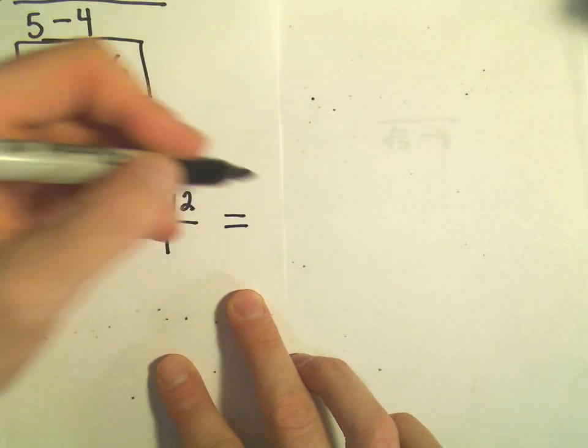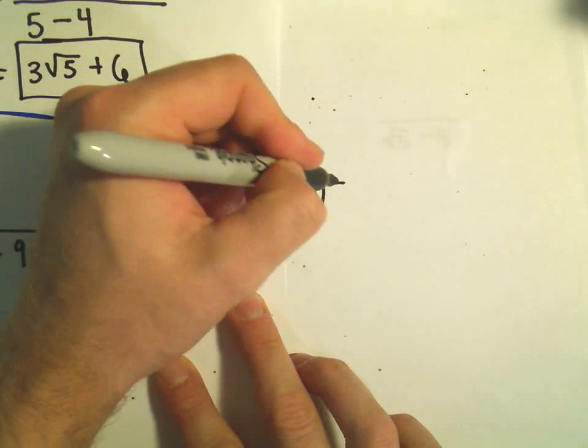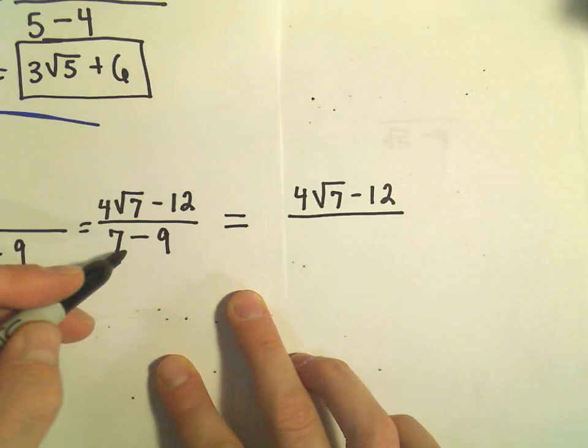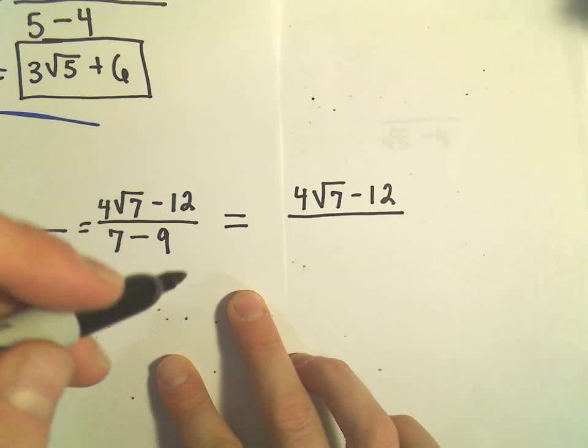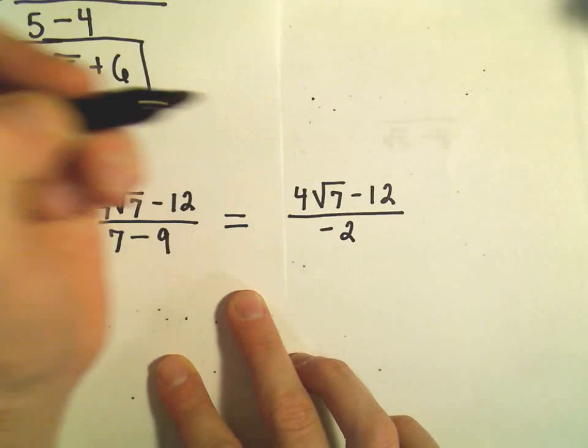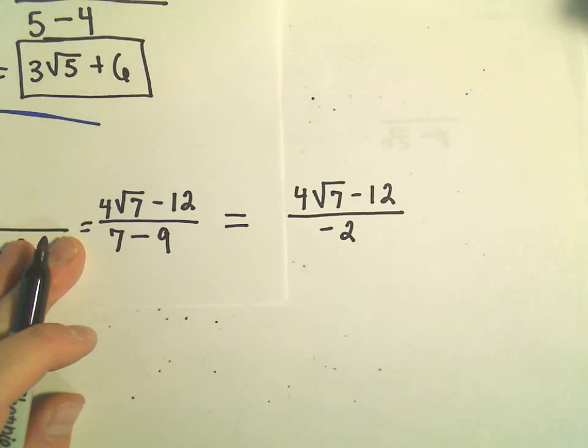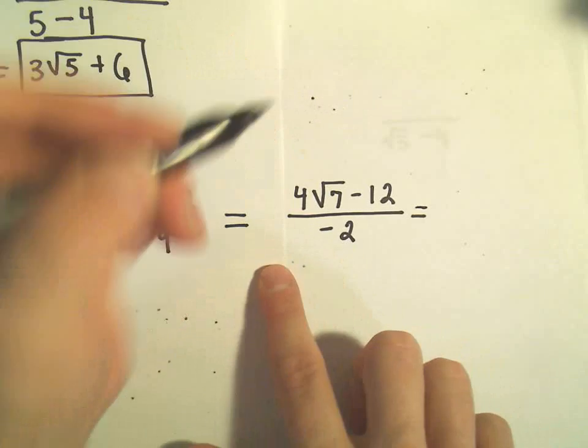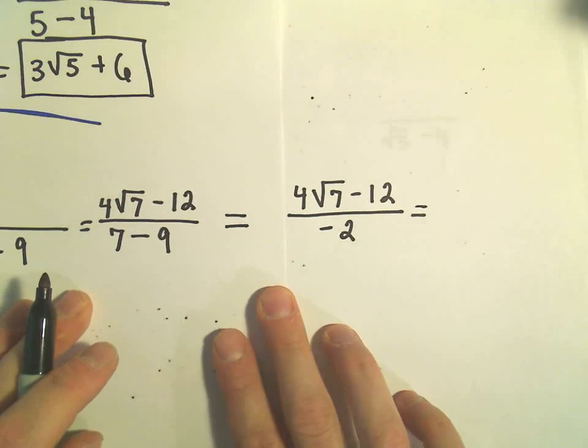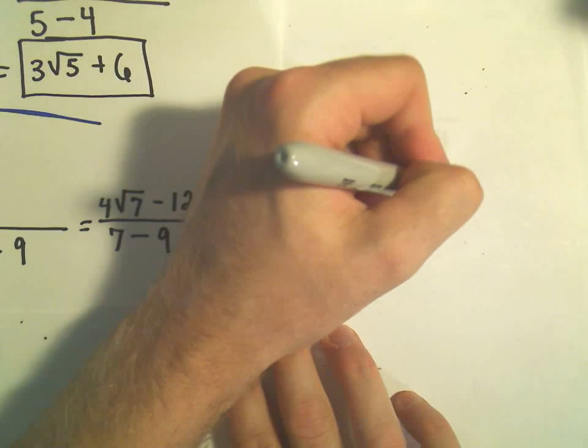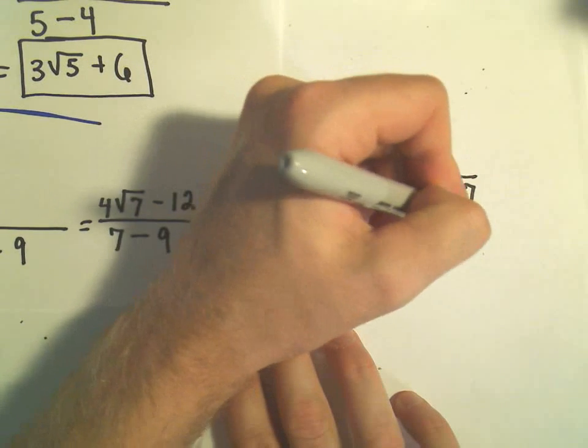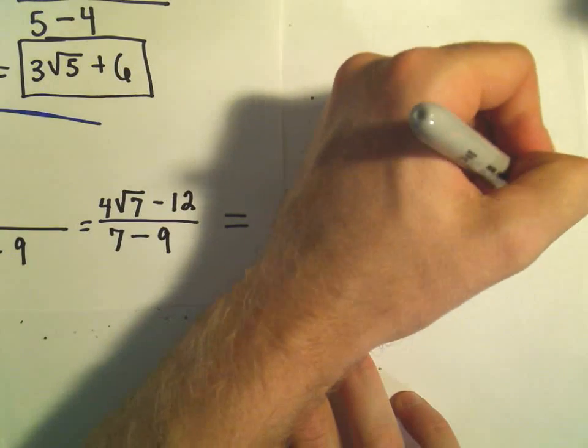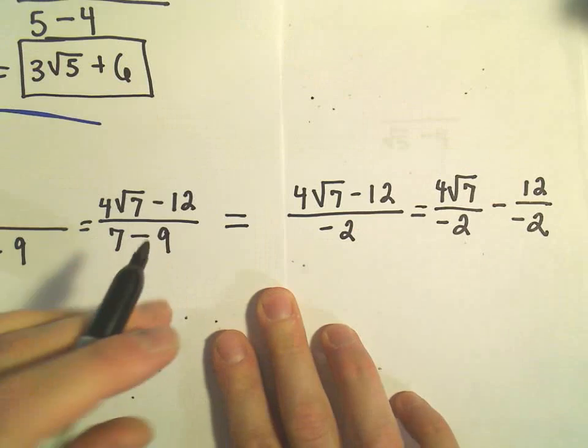Let's give ourselves a little more space here. Okay, so what I would do at this point, that's the same thing as 4 root 7 minus 12, divided by, so 7 minus 9, that would give us negative 2. And I think we can still do a little bit more here, because we have a single thing in the denominator, so we can break up our fraction and make this 4 square root of 7 over negative 2 minus 12 over negative 2.